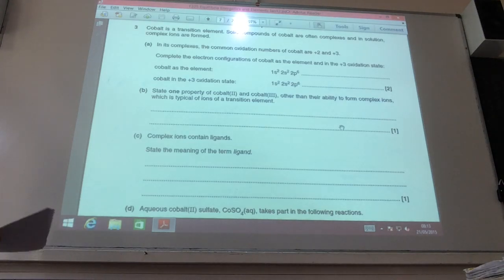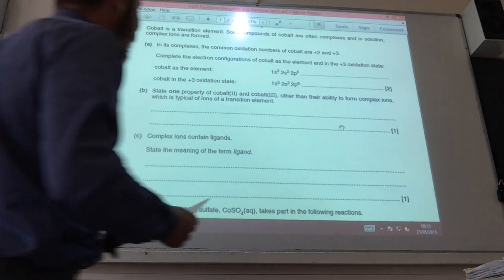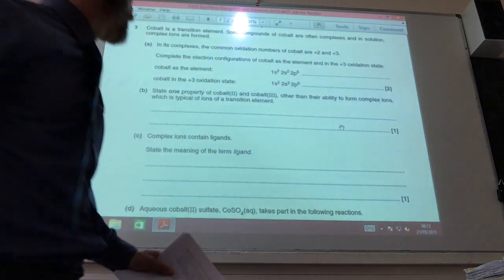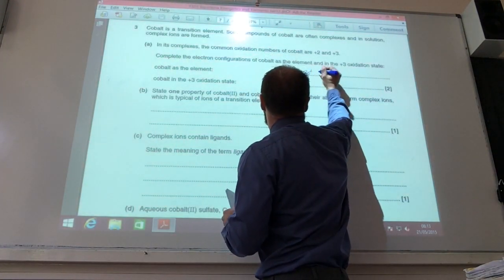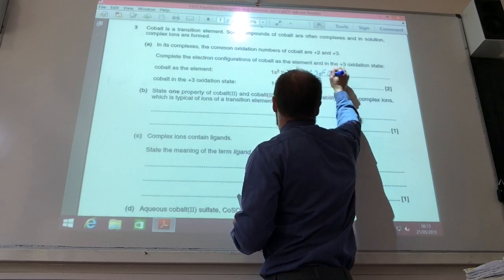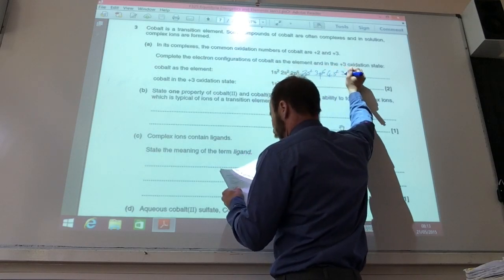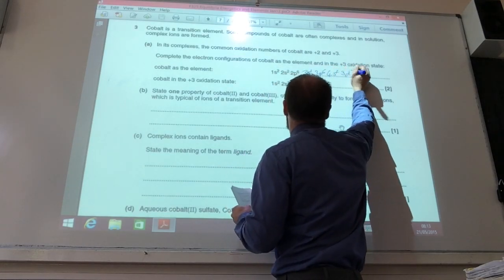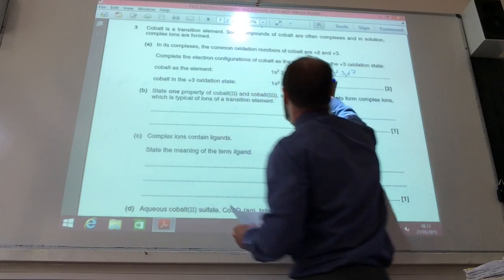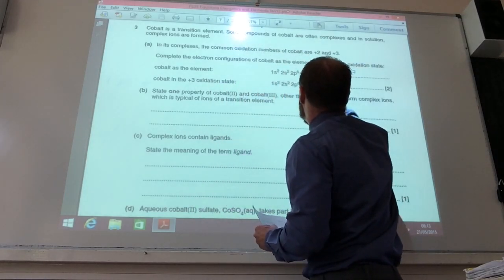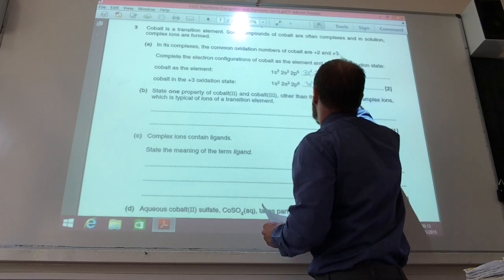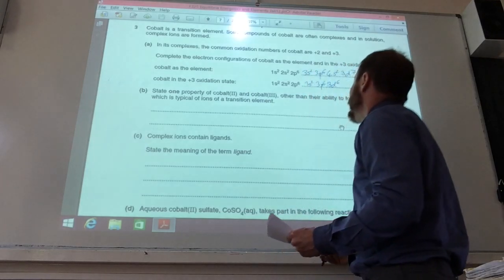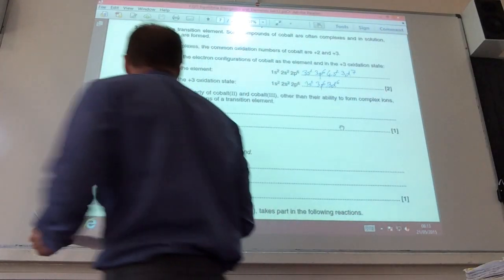On to some transition metal chemistry now. Electronic configuration of cobalt as the element is going to be 3s2, 3d6, 4s2, 3d7. When you go to the plus 3 oxidation state, you lose your 4s, you lose one from your 3d, so it would be 3d6.